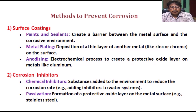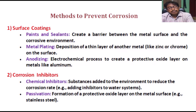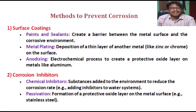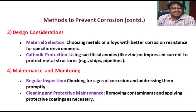2. Corrosion inhibitors: Chemical inhibitors are substances added to the environment to reduce the corrosion rate — for example, adding inhibitors to water systems. Passivation involves the formation of a protective oxide layer on the metal surface — for example, stainless steel.